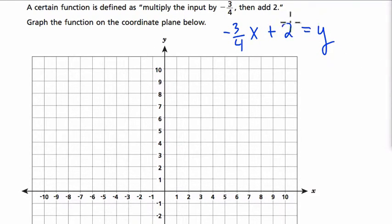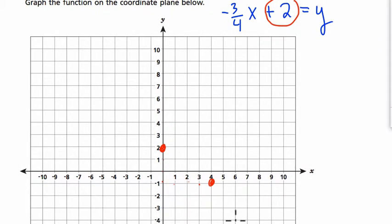They want us to graph it. I know that b is 2, or the y intercept, and our slope is negative 3 fourths. This means I go down 3, 1, 2, 3, and up 4. 1, 2, 3, 4. Down 3, 1, 2, 3, 4. 1, 2, 3, and up 4. 1, 2, 3, 4. And so on and so forth.